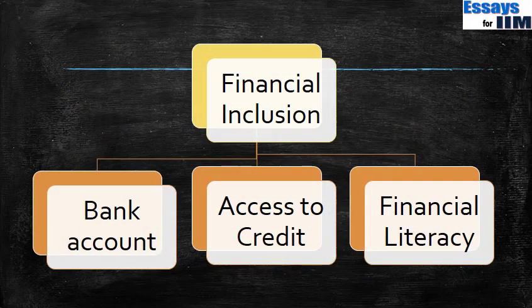So then came Jan Dhan Yojana. Jan Dhan Yojana is looking at financial inclusion in totality. Rather than just opening bank accounts — which was the focus of all earlier schemes — it now looks at three things. The first is opening of bank accounts. The other two are access to credit and financial literacy. The idea of financial inclusion is to provide banking and other credit-related facilities to individuals at low cost.